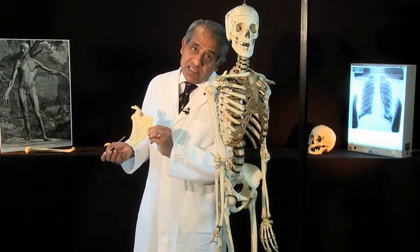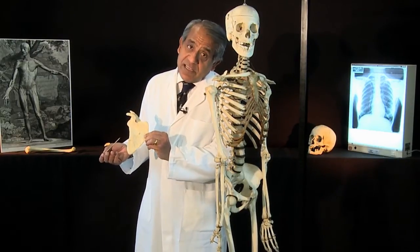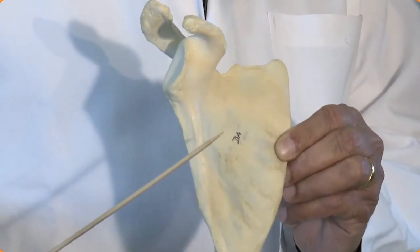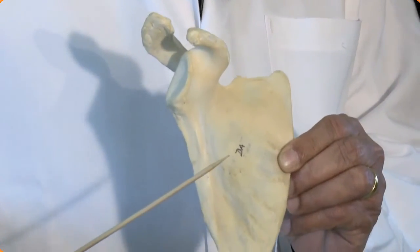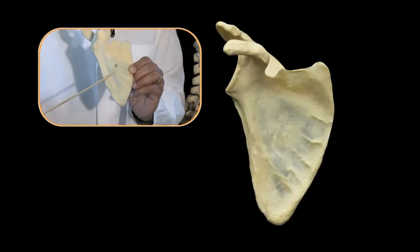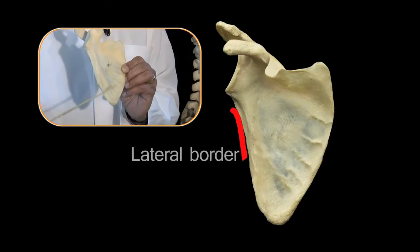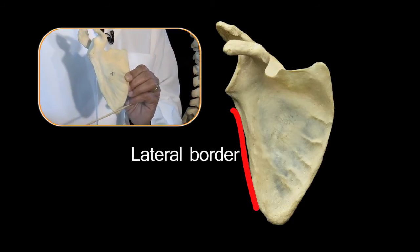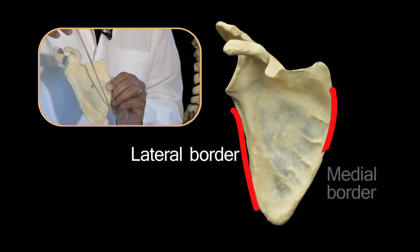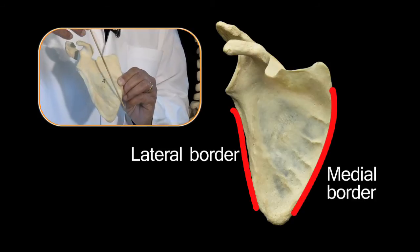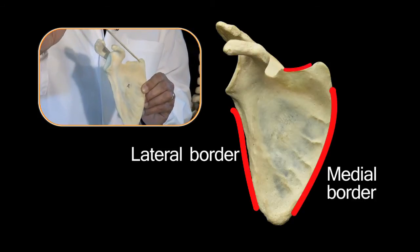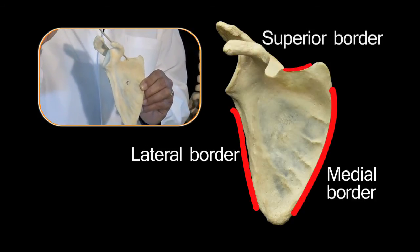So let's just name the borders and the angles. That is the thick lateral border of the scapula, that is the medial border of the scapula, and that is the superior border of the scapula.